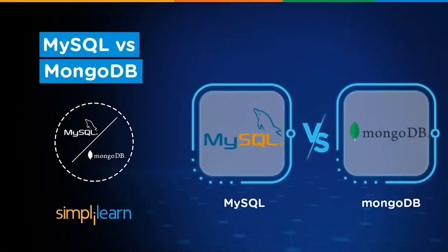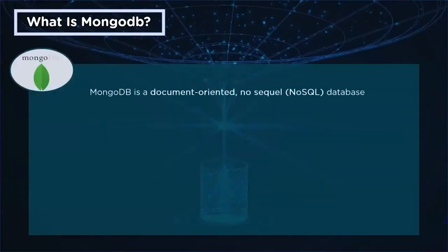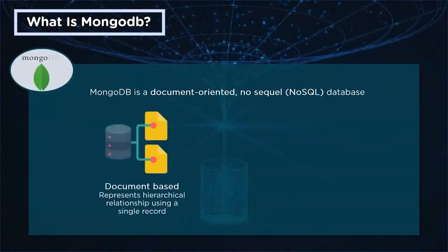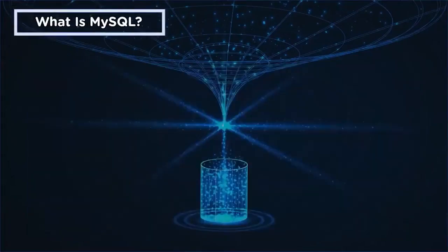In this video we're going to learn about the differences between MySQL and MongoDB. MongoDB is an open-source document-oriented NoSQL database. It is document-based, meaning data is stored represented in a hierarchical relationship using a single record. MongoDB is also schema-free — there's no set schema to define how data is stored, which causes lesser data migrations.